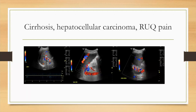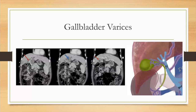Here is an example of a patient with cirrhosis, hepatocellular carcinoma, and right upper quadrant pain who came in for a right upper quadrant ultrasound with Doppler. The patient had portal vein thrombosis. Directing attention to the gallbladder area — without color imaging it looks like a very thickened, irregular gallbladder, but with color you can see large serpiginous color flow there. This is a patient with gallbladder varices — just another manifestation of underlying portal hypertension from cirrhosis.